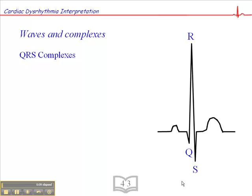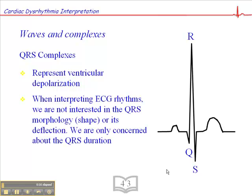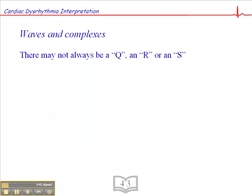The QRS complexes represent ventricular depolarization. When interpreting ECG rhythms, we're not interested in the QRS morphology or shape, or its deflection - whether it's positive/upward or negative/downward. The only thing we're concerned about is the QRS duration: is the QRS narrow or is it wide?